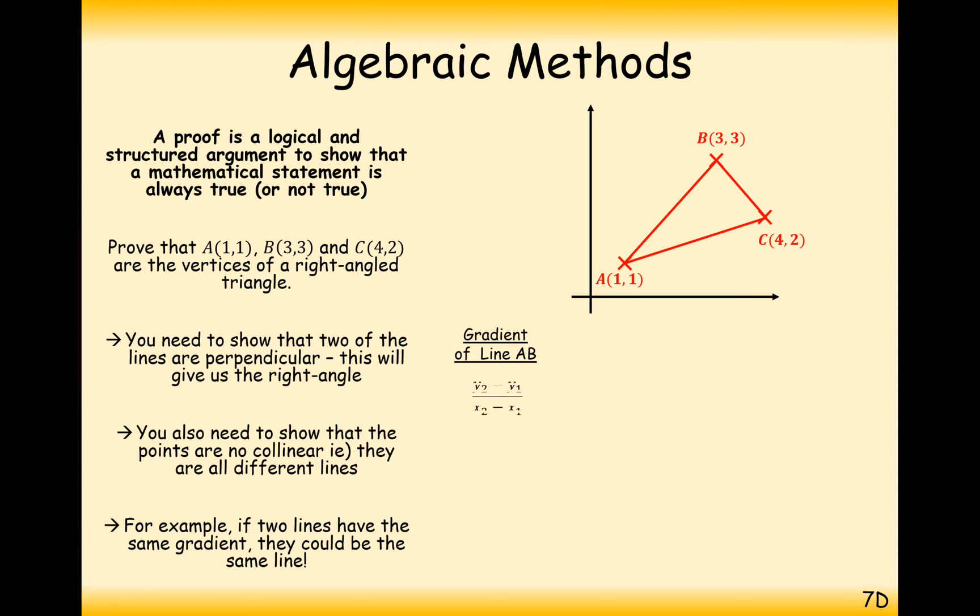So we need to show that the gradients from A to B, so that would be using the formula, will give you one. The gradient from A to C will give you a third. So there's not going to be a right-angle in here. What we need the final answer to be is either minus one, so it's a right-angle with this, or minus three, so it's a right-angle with this. And in this case here, it's going to be minus one. So it's the lines from A to B and the line from B to C